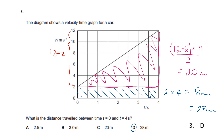Then, not forgetting the rectangle shaded in blue — we add its area to the 20: 2 times 4 equals 8 meters, so in total we have 28 meters. A common error is to forget about this rectangle and go for answer C, but the correct answer is D: 28 meters.